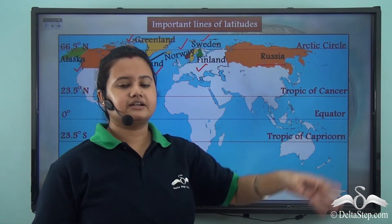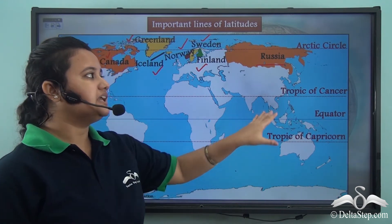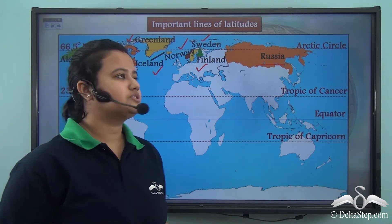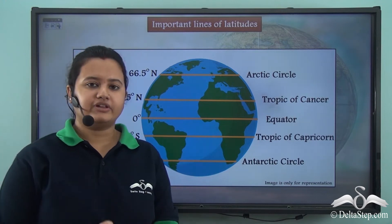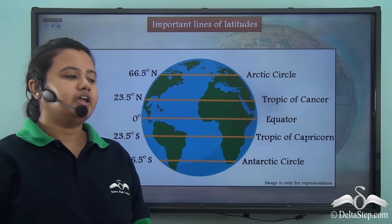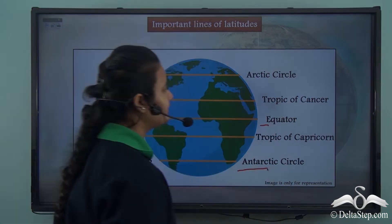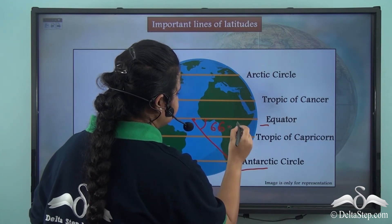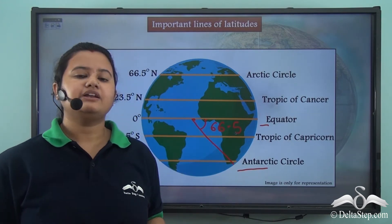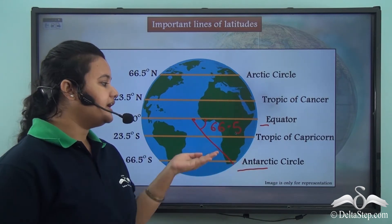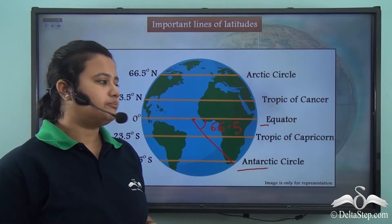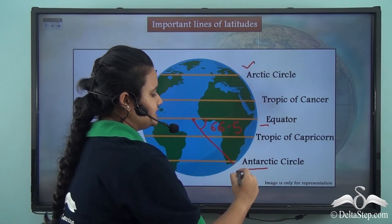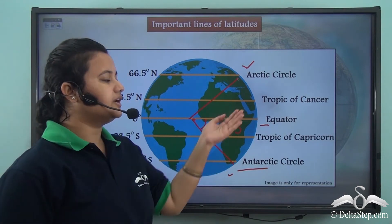Just like the Arctic Circle, there is another important line of latitude that lies at an equal distance from the equator but to the south. The line of latitude that lies sixty-six and a half degrees south of the equator is called the Antarctic Circle. Both the Arctic Circle and the Antarctic Circle lie at the same angular distance of sixty-six and a half degrees from the equator.